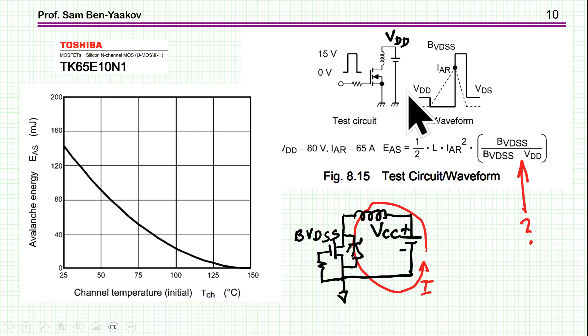They are showing an experiment or example of this avalanche. This transistor, you turn it on. There is a power supply VDD and an inductor. Consequently, when the transistor is on, the current goes up. Then you turn it off. As you turn it off, the current in the inductor is interrupted. Consequently, the voltage tries to go up until the transistor breaks down.